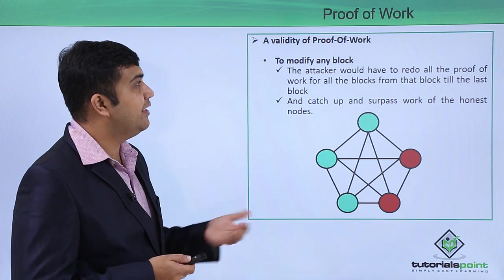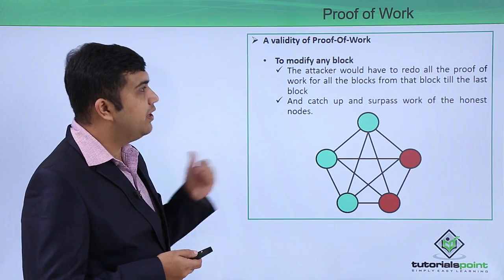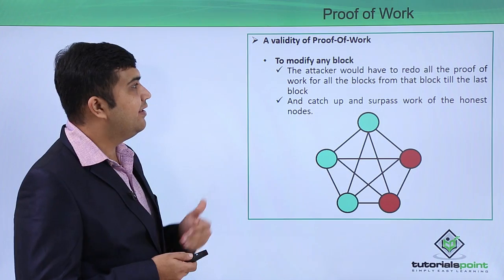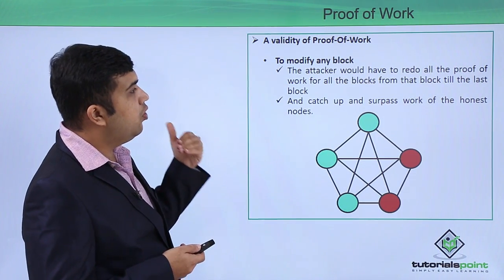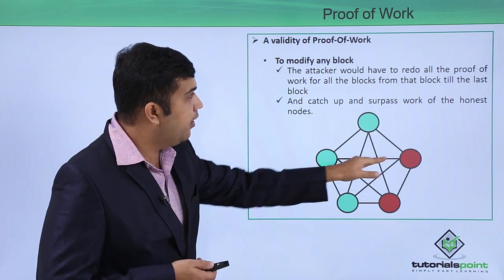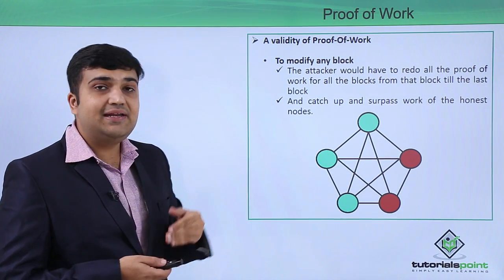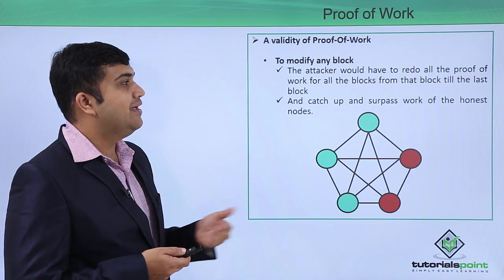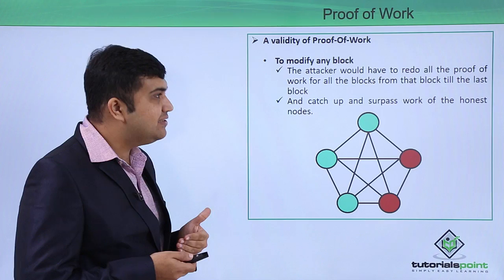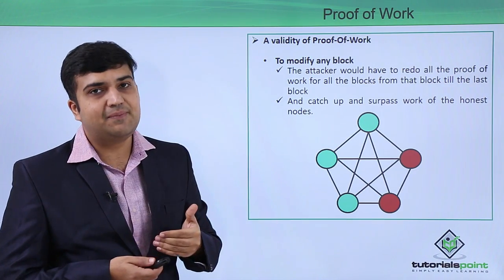For example, even if somebody tries to modify any block, then the attacker would, as we have discussed, have to redo all the proof of work for the blocks from until the last block of the blockchain. Hence, to catch up and surpass the honest nodes will be very difficult.